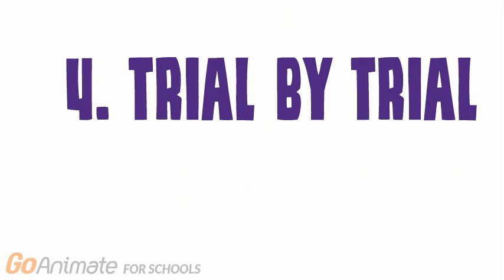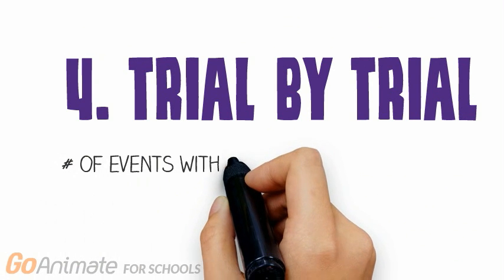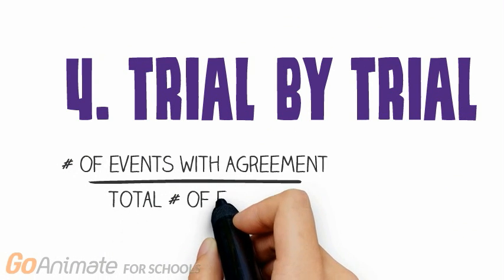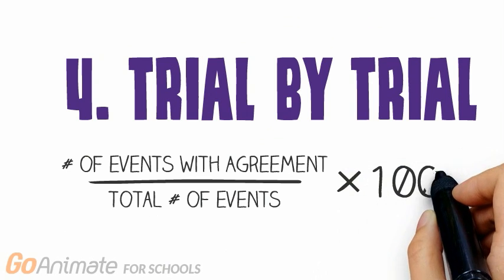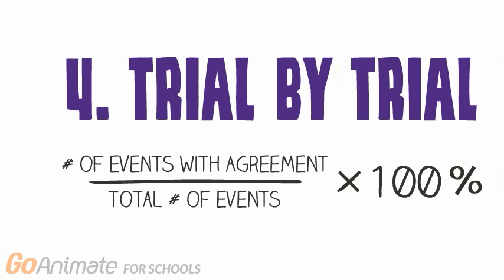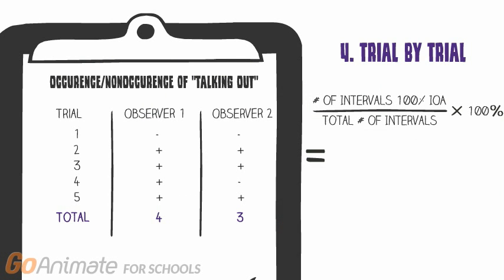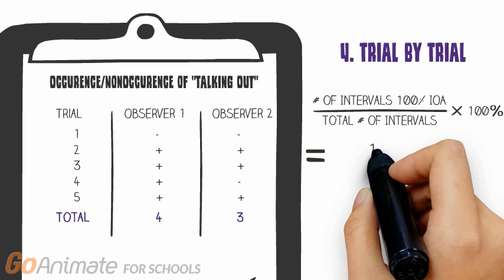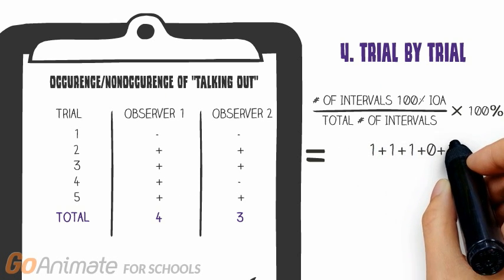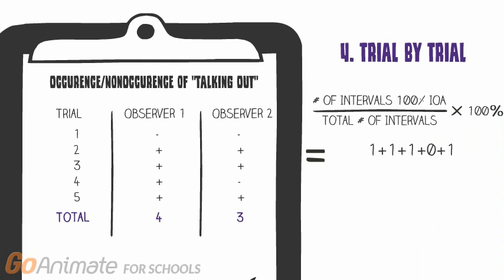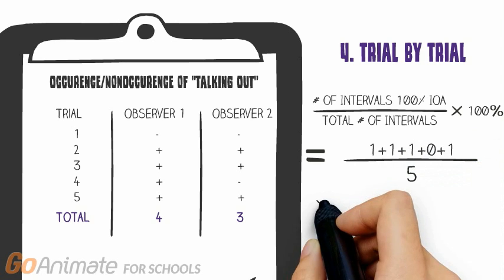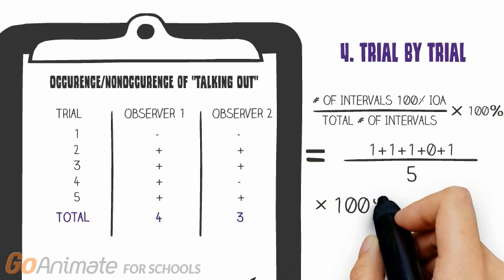The previous IOA methods can be used for free operant responses, but not for trial-based or yes-no measurement systems. Trial-by-Trial IOA measures the number of trials with agreement divided by the total number of trials. This metric is as stringent as the exact agreement approach. If our observers had taken trial-by-trial data on the occurrence or non-occurrence of talking out, we would sum the number of trials on which they agreed — trials 1, 2, 3, and 5 — and divide by the total number of trials. Multiply by 100% and our IOA is 80%.